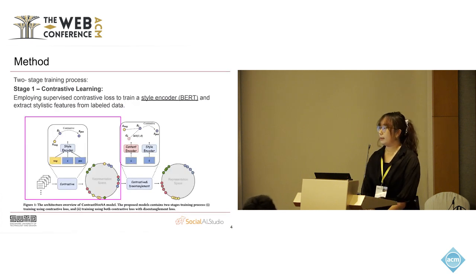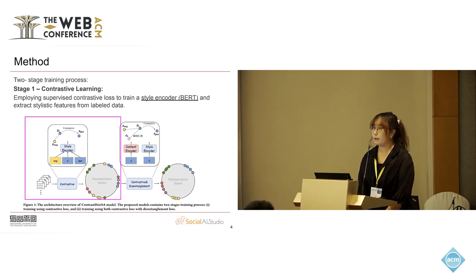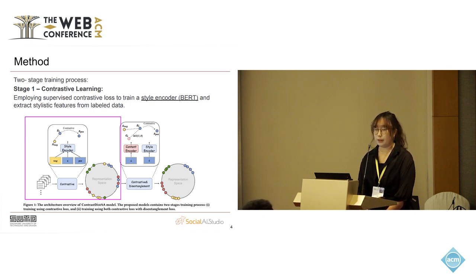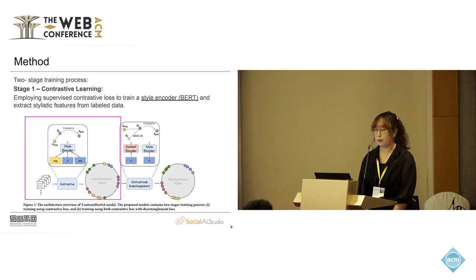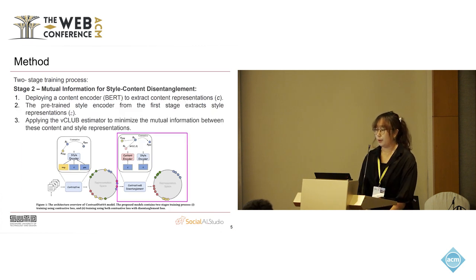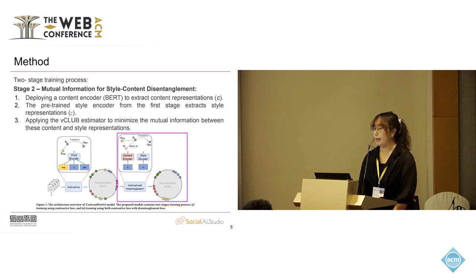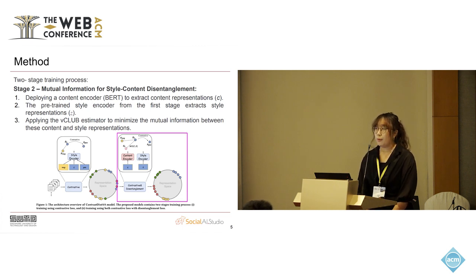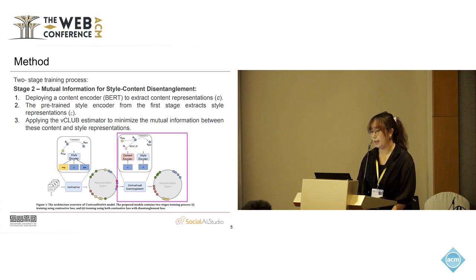Our contrastive disentanglement method is a two-stage training process. In the first stage, called contrastive learning, we use supervised contrastive loss to train a style encoder. We selected BERT, since it is a very effective encoder model. After obtaining the first encoder, we go into stage two, called mutual information for style-content disentanglement. Here we use another content encoder, also BERT, to extract the content representation. So now we have two encoders — one style encoder and one content encoder. After that, we apply a mutual information loss, using the VCLAB estimator to minimize the mutual information between the two encoders.